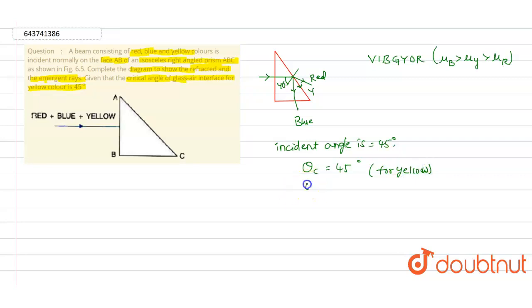And θc is equal to sin⁻¹(1/μb), so this is for the blue, for blue color.